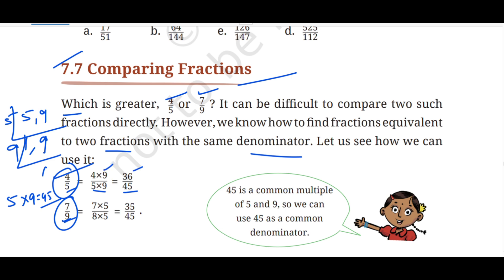So we have to multiply with the same number 9, and we get 4 times 9 = 36. Now for the other fraction, 9 times 5 is 45, and we have to multiply with 5, so 7 times 5 is 35. Now we get 36 upon 45 and 35 upon 45. So we can compare 36 to 35 — 36 is greater than 35. So 4 upon 5 is greater than 7 upon 9. This is how you compare two fractions.